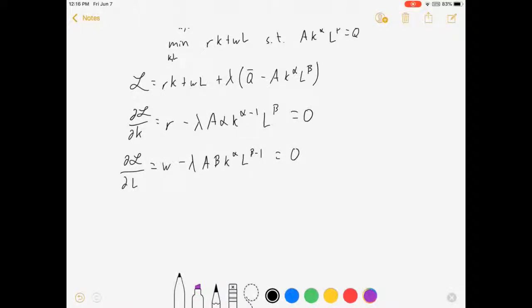It is equal to W minus lambda A beta K to the alpha L to the beta minus one and we're gonna set that one equal to zero also. And our last condition is that lambda times Q bar minus AK to the alpha L to the beta has to equal zero and we know since the constraint is binding that lambda is greater than zero, so we can simplify this as just being Q bar equals AK to the alpha L to the beta.